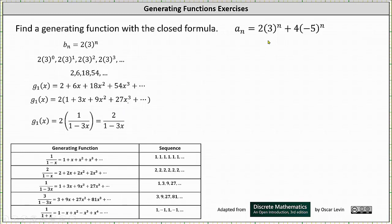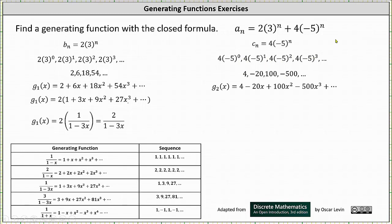Now let's focus on four times (-5)^n. We let c_n equal four times (-5)^n and generate several of the terms in the sequence. Again, we have n equals zero, one, two, three, and so on. Simplifying, the sequence is 4, -20, 100, -500, ...